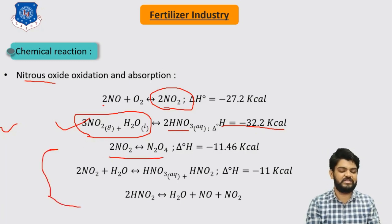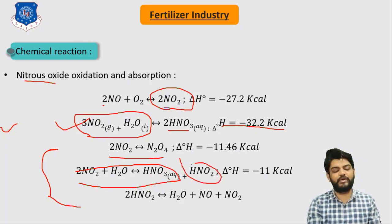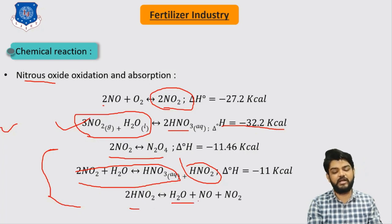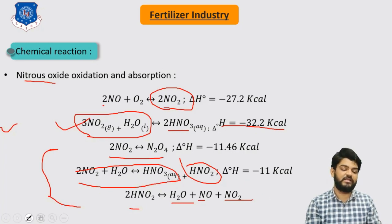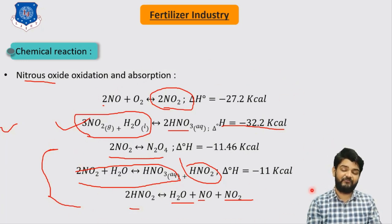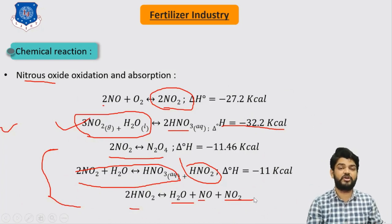NO2 can also reversibly produce N2O4, but these are side reactions we will not focus on. Another reaction can produce nitric acid and 1 mole of HNO2 gas, which again decomposes in water into NO and NO2. These are all the chemical reactions involved in this process. Remembering all these reactions will be very beneficial for understanding the flow sheet and process description for the production of nitric acid.